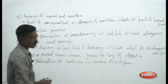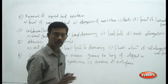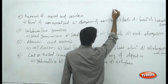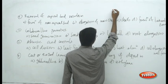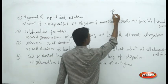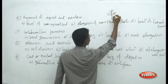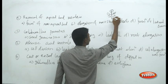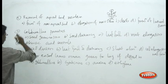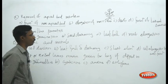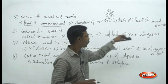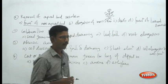The first question: removal of apical bud results in what? You are going to remove the apical bud of a plant. The choices are: formation of new apical bud, elongation of main stem, death of the plant, and formation of lateral branching.